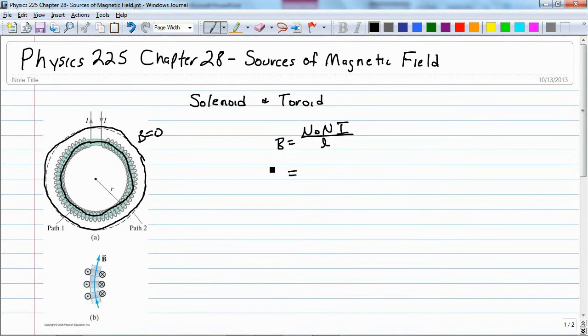And the length is just that circumference. So we have mu nought times capital N for all the loops times I divided by 2 pi times little r.